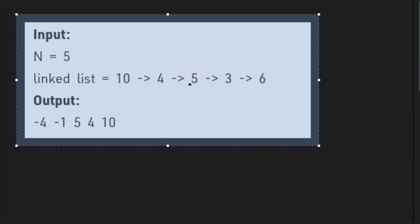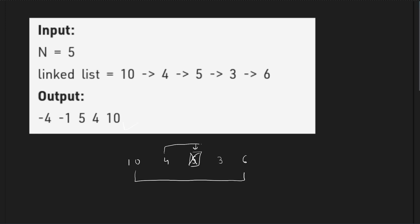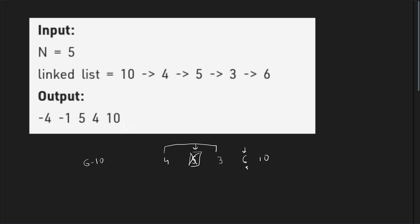You are given a linked list — let's say the elements are 10, 4, 5, 3, and 6. When there are an odd number of elements, you can safely ignore the middle element. You form pairs: 10 is paired with 6, and 4 is paired with 3. You replace the first value with (second minus first), so 6 minus 10 gives minus 4, and the last position gets the original first value, which is 10.